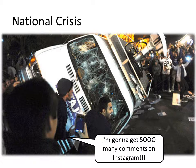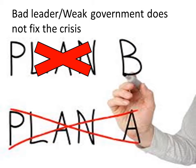Second, there has to be a national crisis — something that nearly everybody in the country would be unhappy with. It could be something as harmful as a war, or something not as physically dangerous, like unemployment, people not having jobs, or inflation, where money becomes worthless and you can't buy anything. The third step is that the bad leader or weak government is unable to fix the crisis — they may not be able to stop the war or give people jobs. Keep in mind that these are very broad examples.